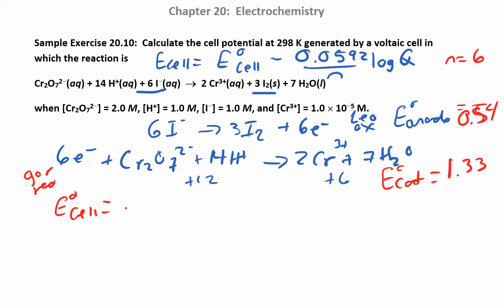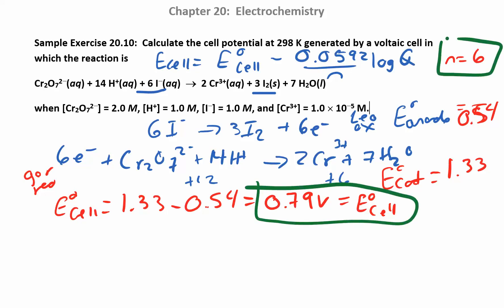So we can find our E°_cell, which is the first step here. Cathode minus anode: 1.33 - 0.54. So far this isn't really new, we've done this before. We get 0.79 volts as our E°_cell. So that's our E°_cell. We need to know number of moles of electrons being transferred. So far we have our E°_cell, we have our n. Now we have to work on our Q.